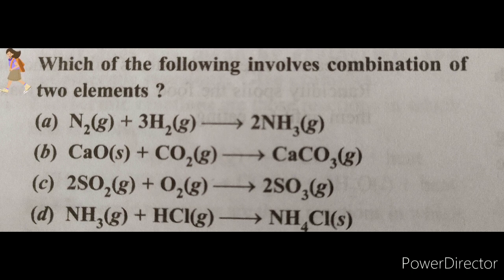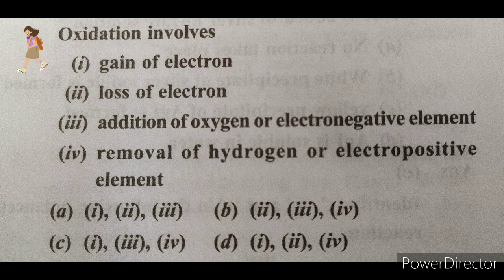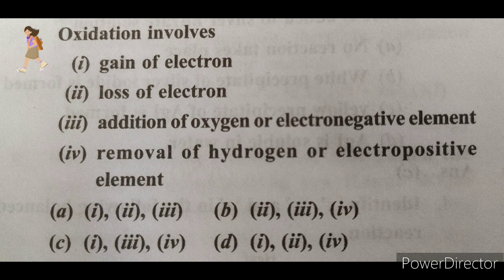Next question: Oxidation involves—the options given are gain of electron, loss of electron, addition of oxygen or electronegative element, and removal of hydrogen or electropositive element.